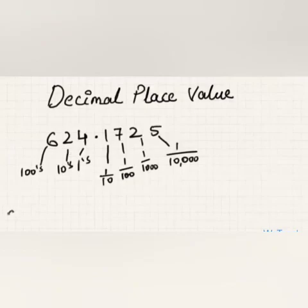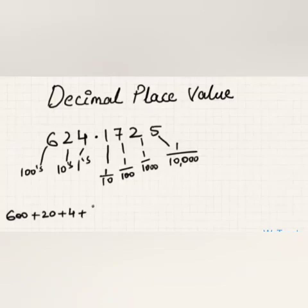The expanded form can be written as: six in the hundreds place becomes six hundred, two becomes twenty, and four in the units place is written as four. Coming to the decimal part, one in the one-tenths place becomes one-tenth, and seven in the one-hundredths place becomes seven over one hundred.